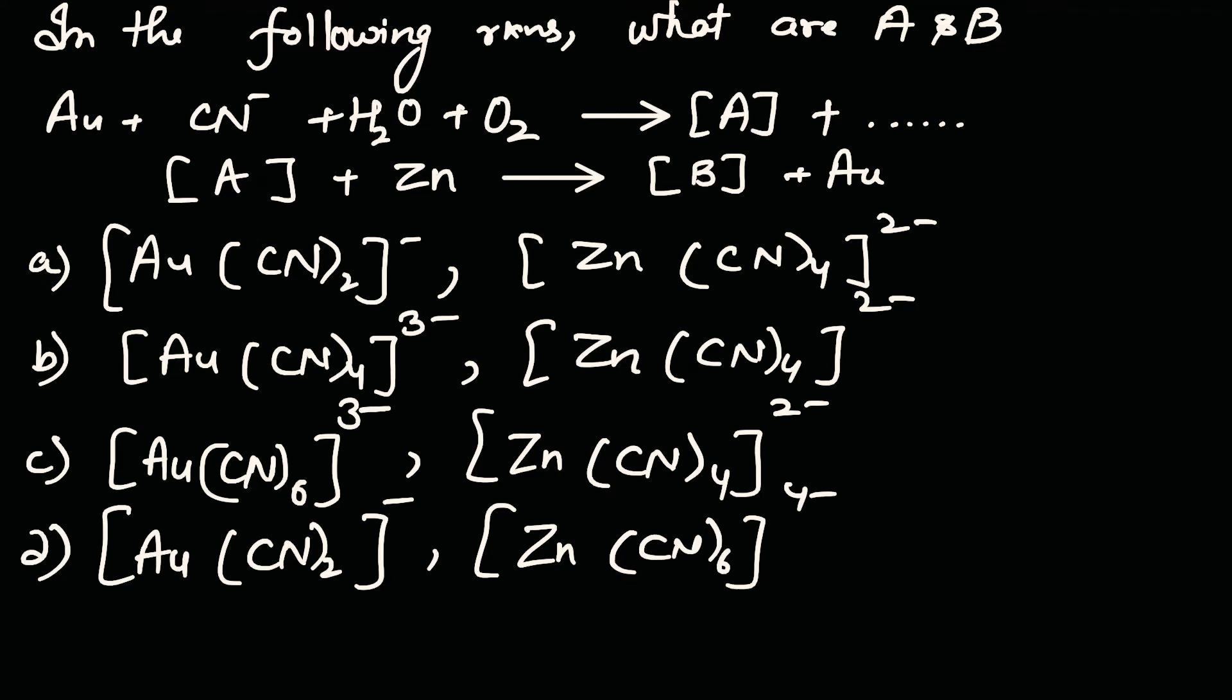Let's learn about the extraction of gold. In this question, gold is reacting with cyanide in the presence of H2O and O2 to form compound A. This A is reacting with zinc to form B plus gold is extracted. These are the four options. First, let's learn about a process named MacArthur-Forrest cyanide process.